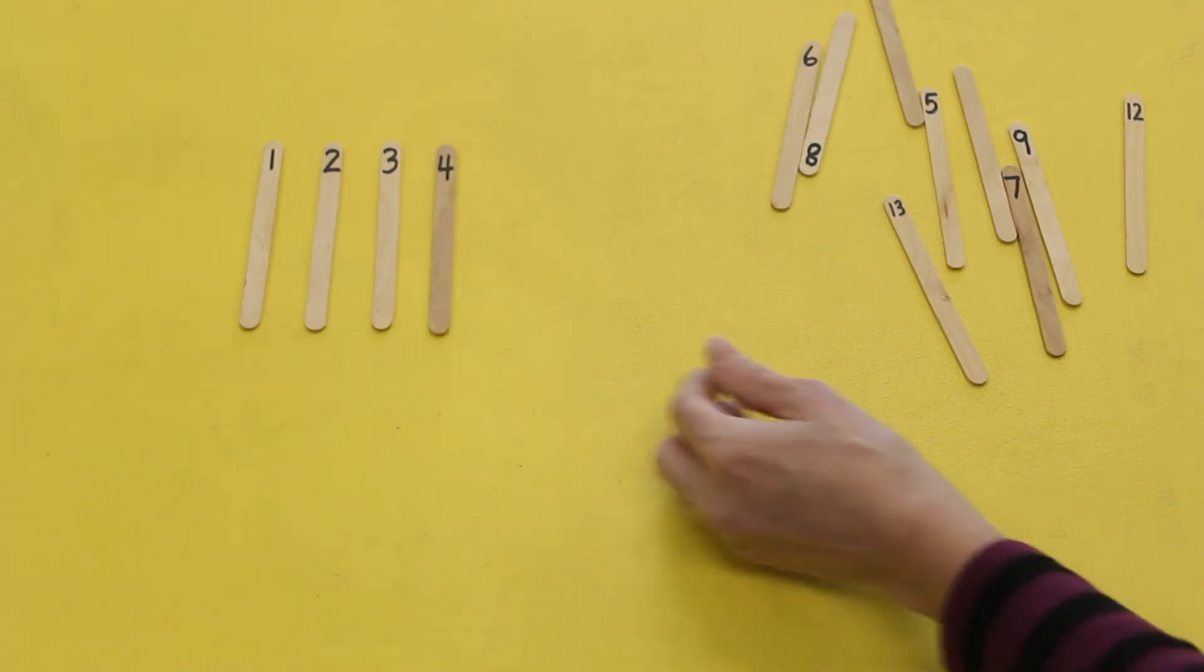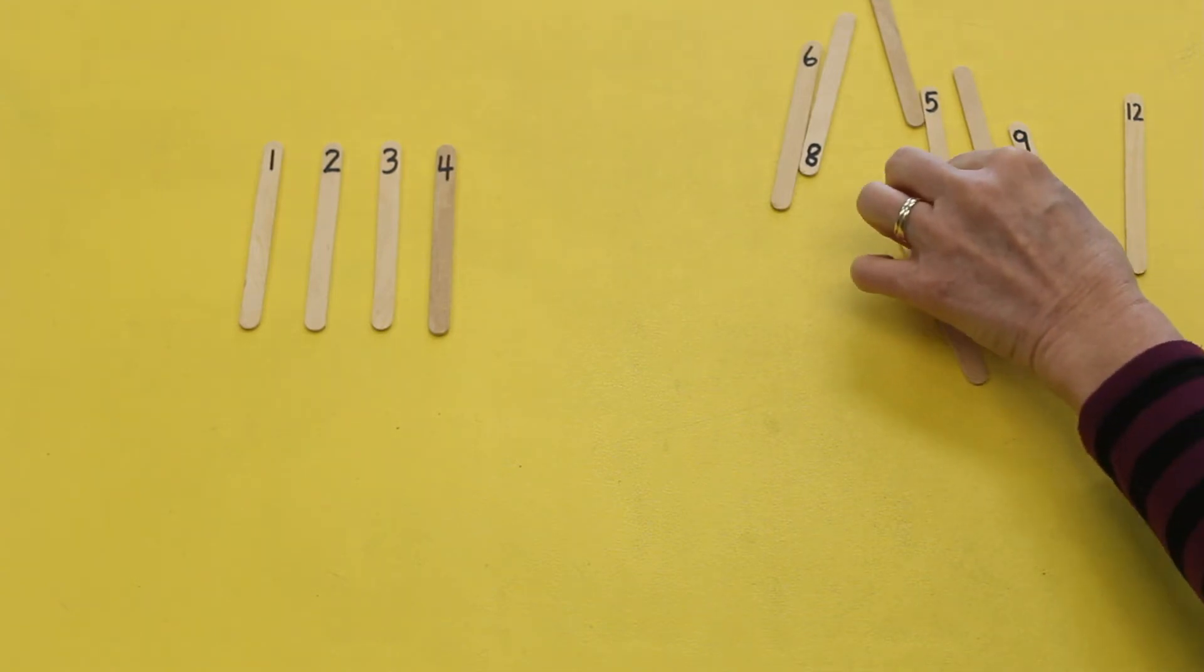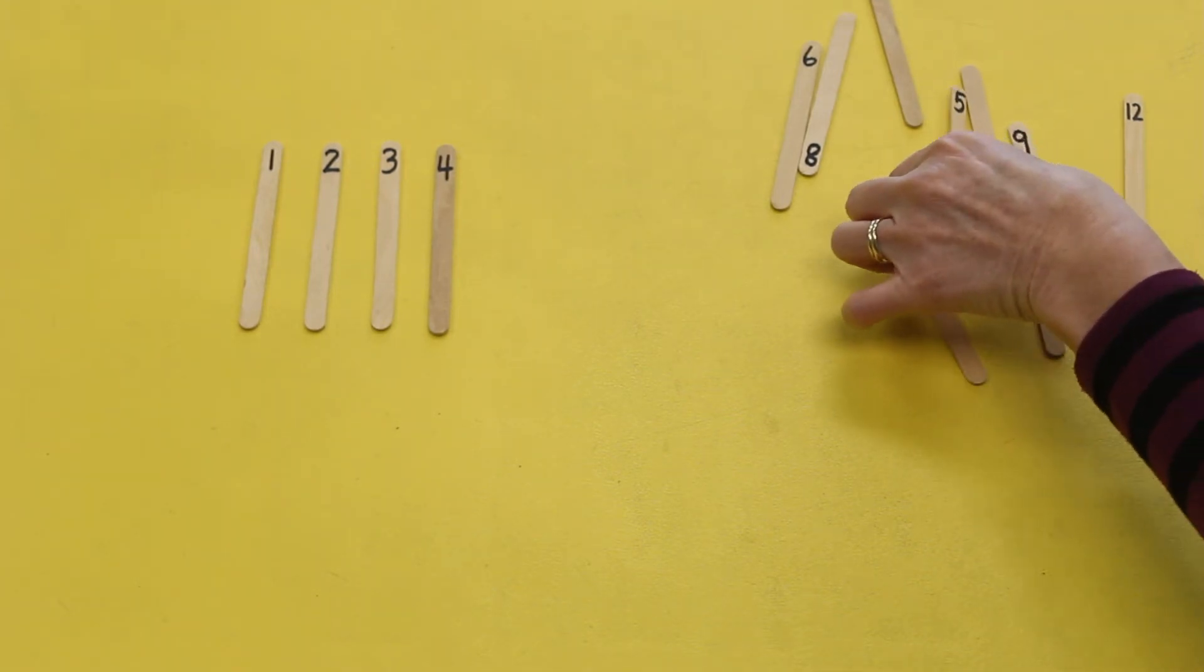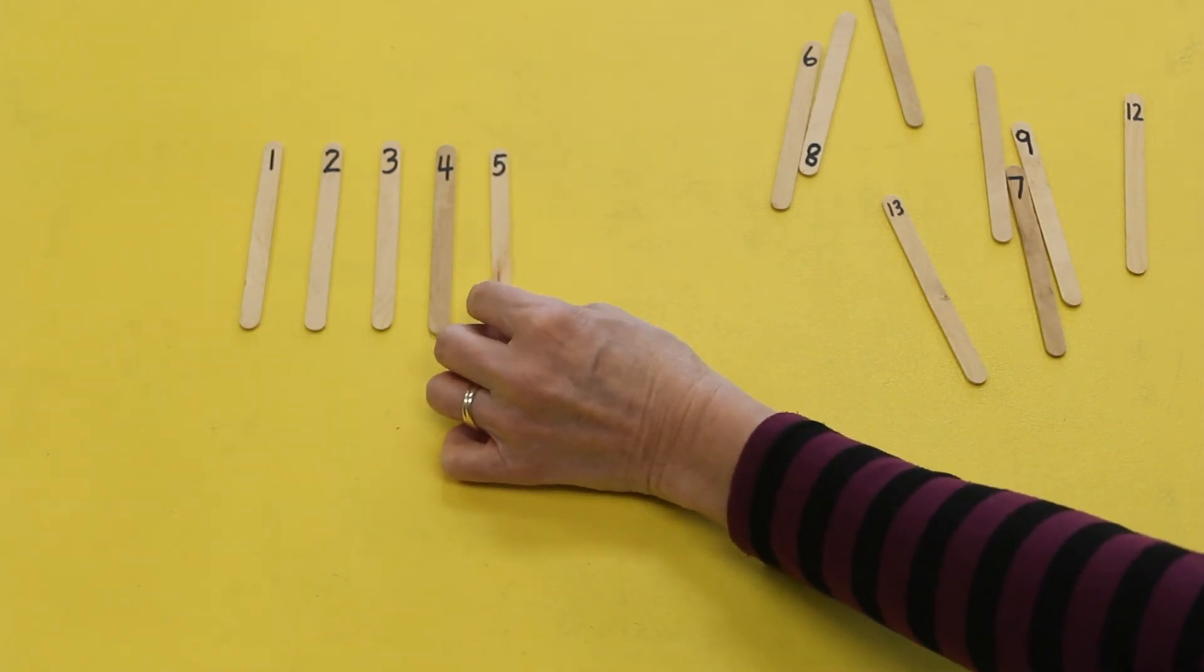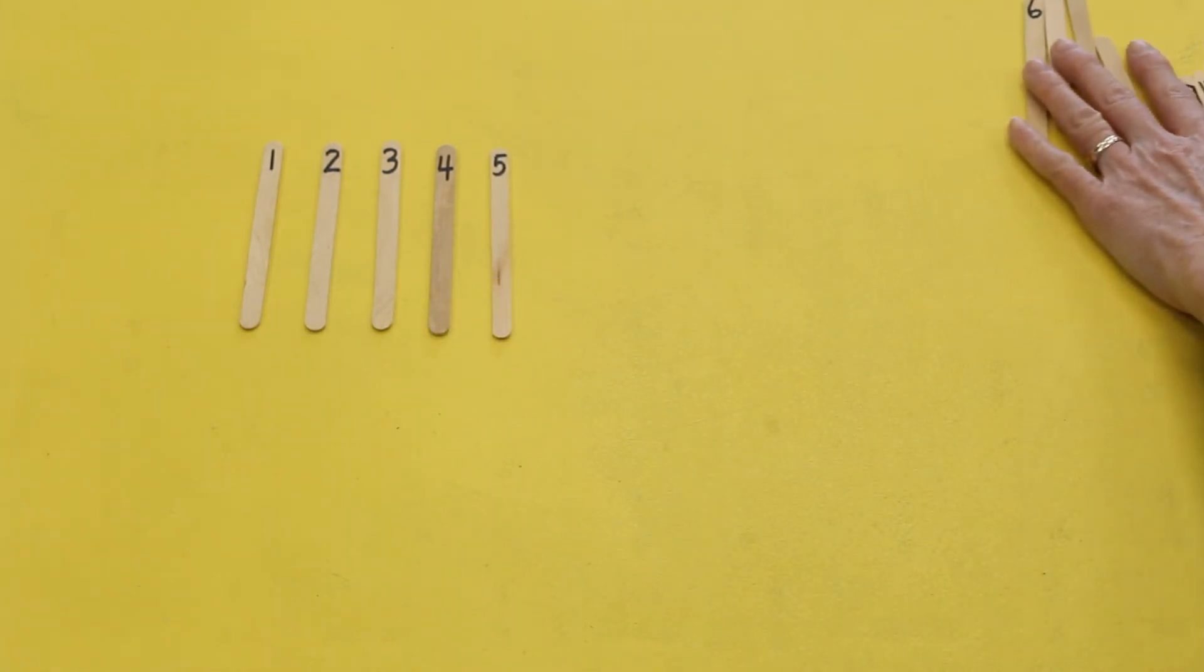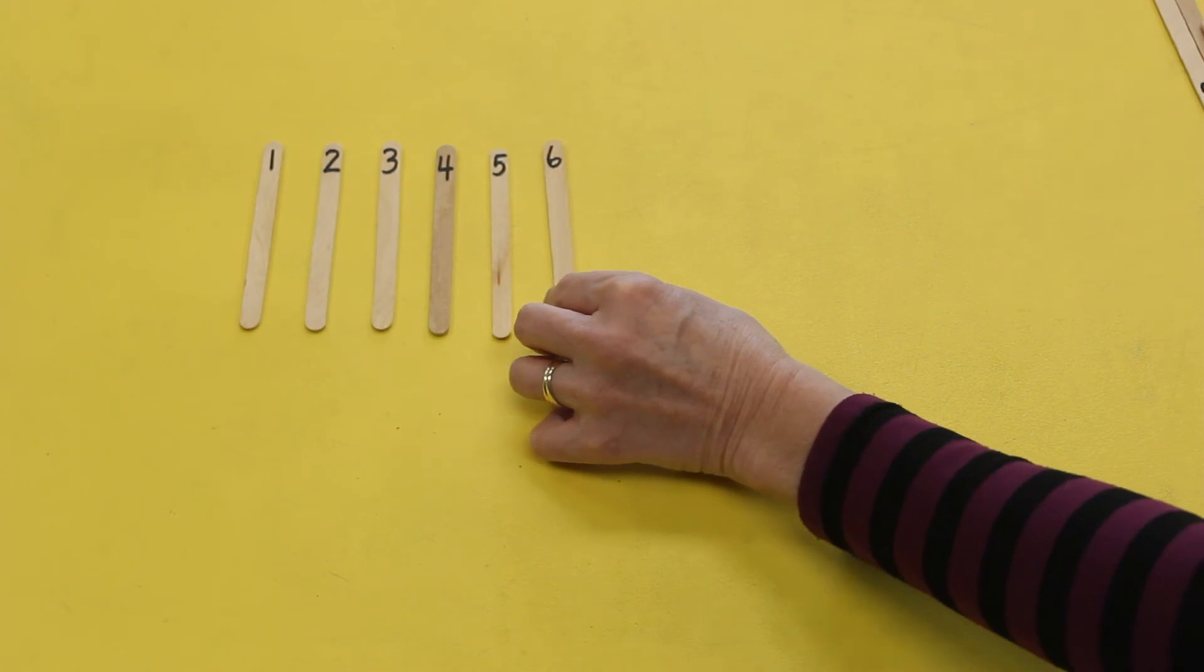What comes next if we're going to continue to put our popsicle sticks in numerical order? Good Parker, did you say five? You're correct, five comes next. What comes after five? Jenny, you're right, six comes after five. Good job.